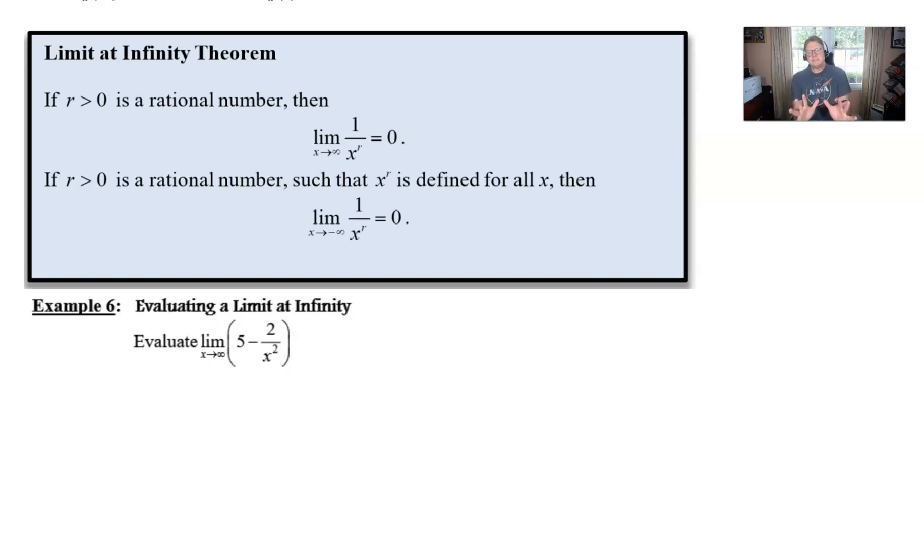So the theorem reads maybe a little complicated when you first pass over it, but when you start to really think about what it's saying it's very accessible and the language doesn't seem to be all that confusing. So we say that if R is a rational number, well what that basically means is any kind of a fraction, then the limit as x approaches infinity of 1 over x to the R power is going to equal 0.